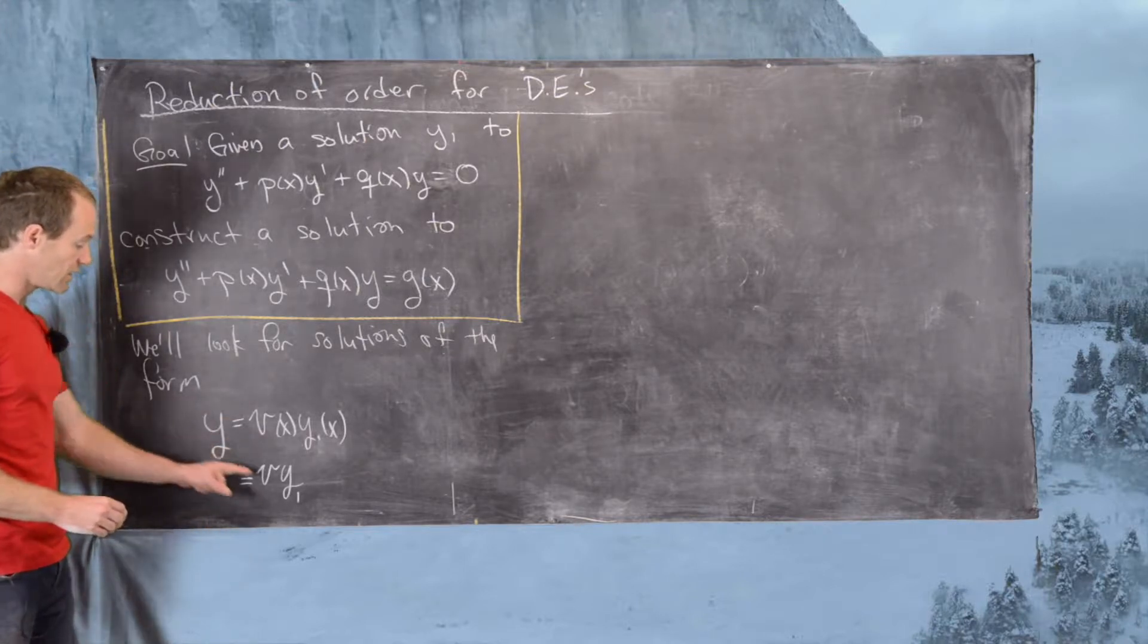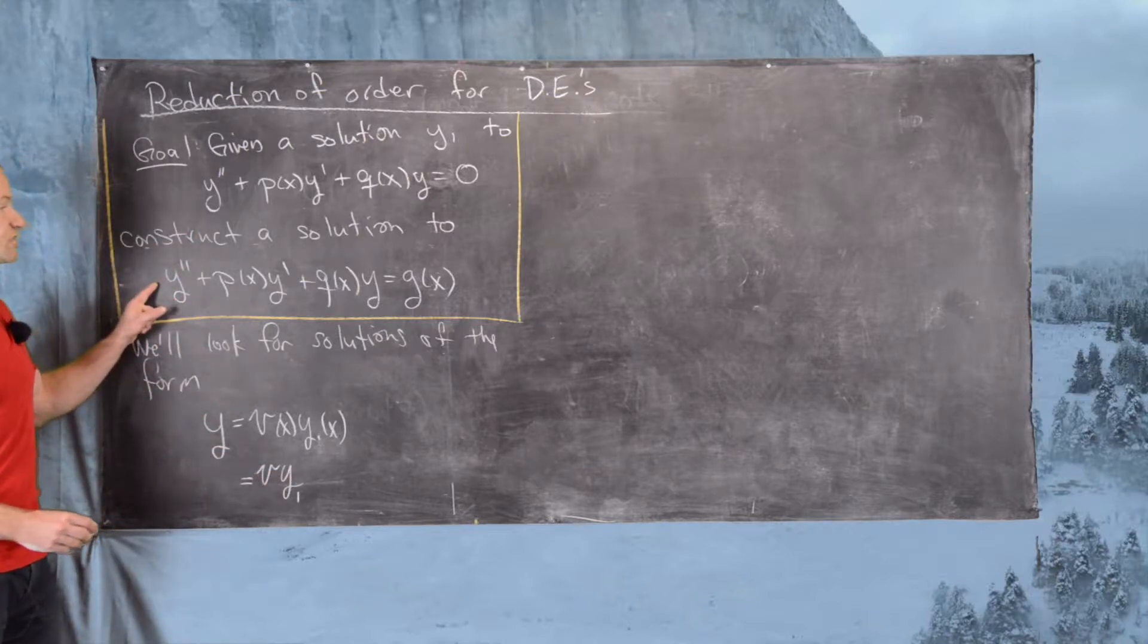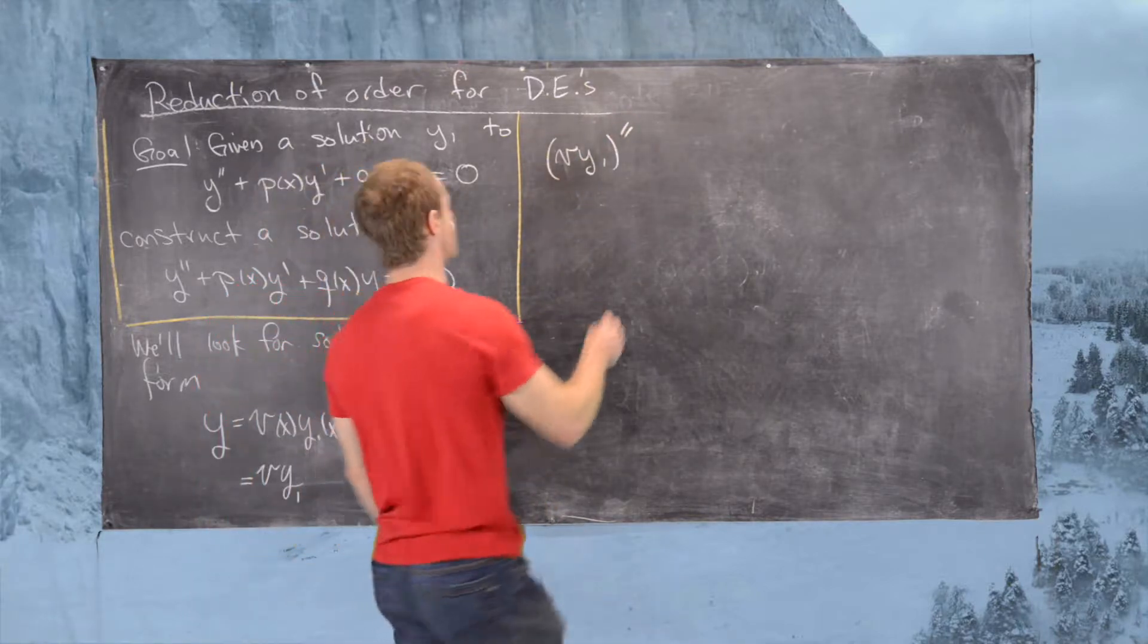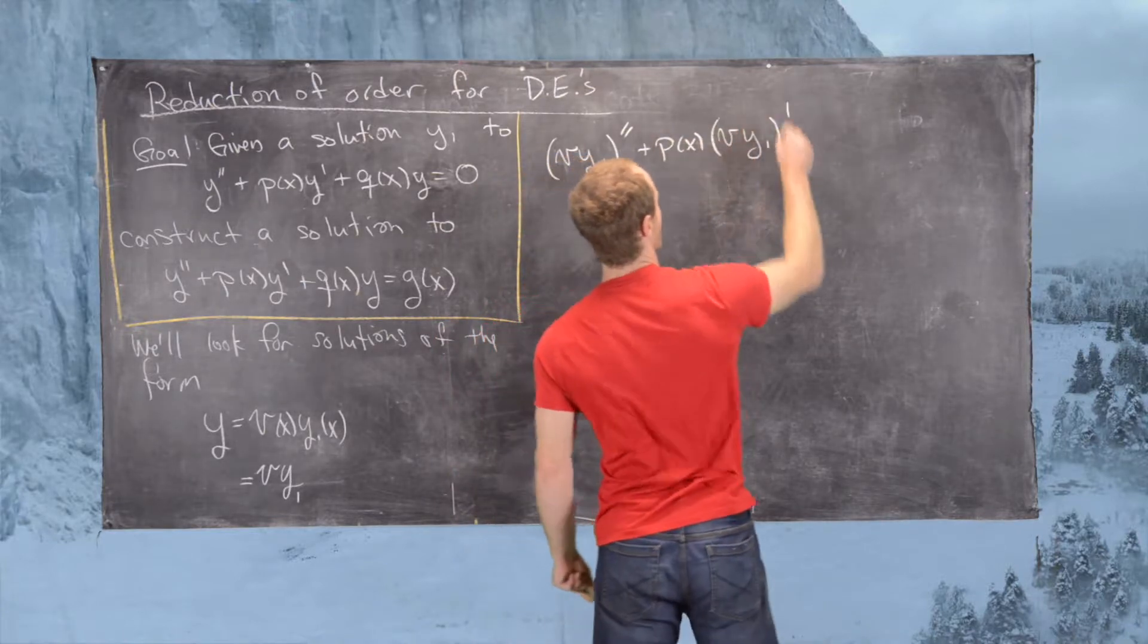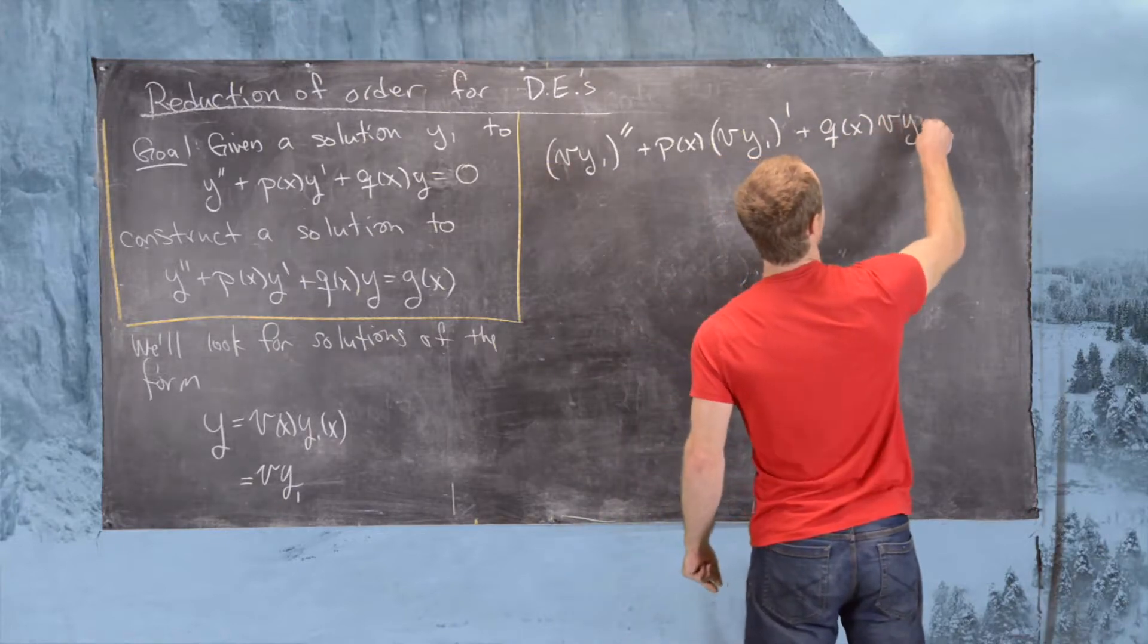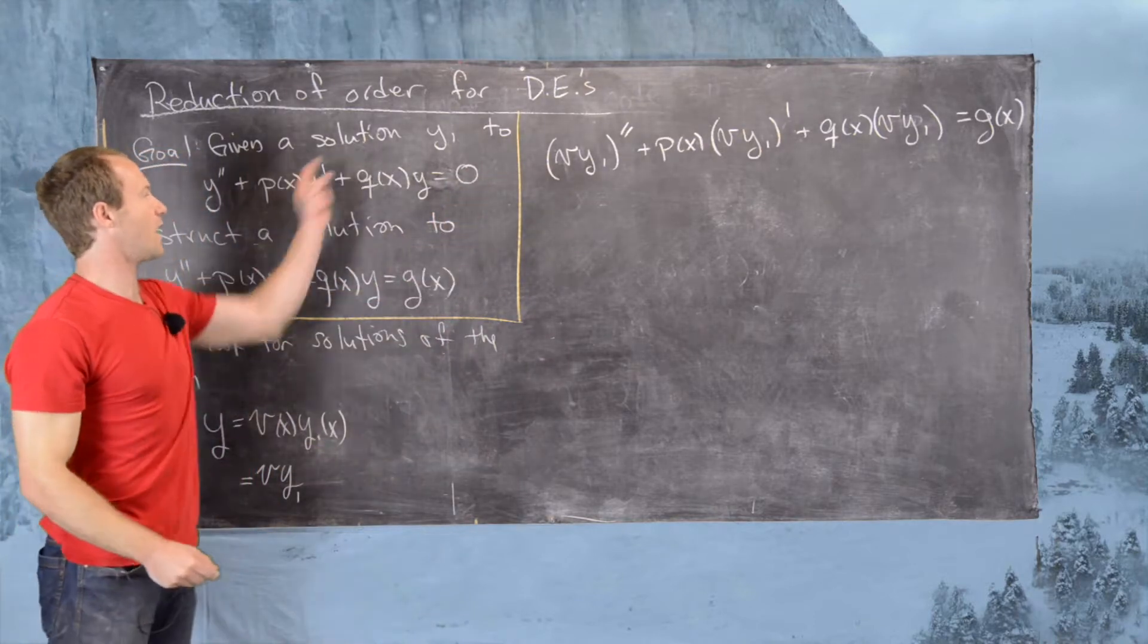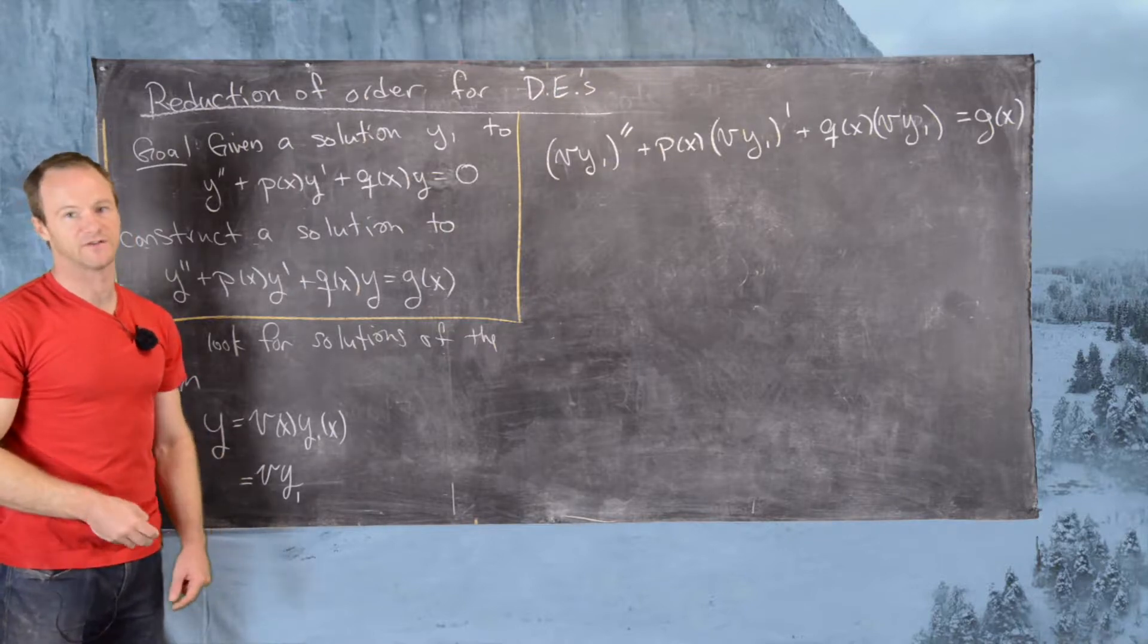From here, we want to plug this function, y1 times v, into this differential equation and see what happens. So that means we need (vy1)'' + p(x)(vy1)' + q(x)(vy1), and our goal is for this to be equal to g(x). What we want to do is use the fact that y1 is the solution to this homogeneous differential equation to get some kind of simplification effect.